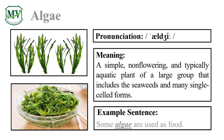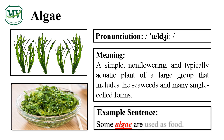Please repeat the word after me. Algae. Let's spell it: A-L-G-A-E. Algae. Great! Some algae are used as food. Can you try reading the sentence on your own?